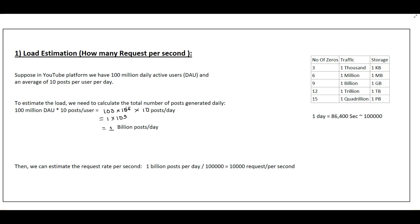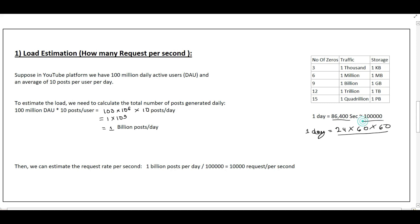To ease our calculation, 100 million becomes 100 × 10^6, and 10 posts stays as is. Combining the zeros: 10^6 gives six zeros, then seven, eight, nine — so it becomes 10^9. Referring to the table, 10^9 in traffic is one billion. So we are getting one billion posts per day. To get requests per second, we divide by the number of seconds in a day: 24 × 60 × 60 ≈ 86,400 seconds, which rounds to 100,000 seconds. So one billion divided by 100,000 gives us 10,000 requests per second.